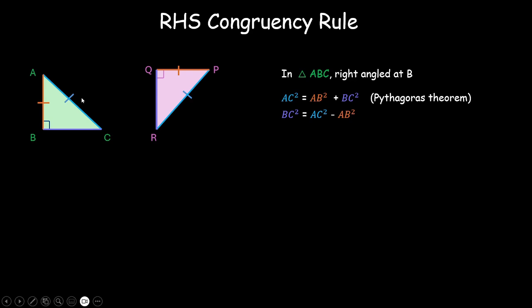Now, it is given that this AC is equal to PR. So, definitely AC square is also equal to PR square. So, let us just substitute it over here. BC square is equal to PR square minus again AB is equal to QP. So, AB square is equal to PQ square. Let us write PQ here in place of AB and let us call this entire equation as equation 1. So, BC square is equal to PR square minus PQ square.